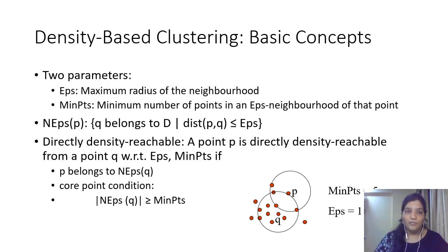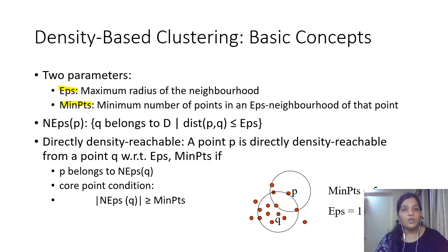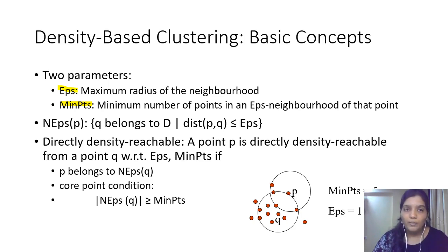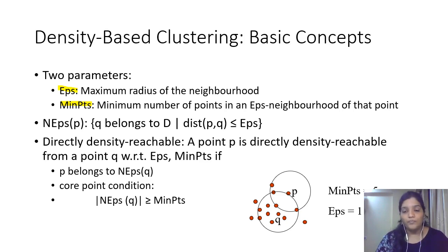When we talk about density-based clustering, we basically focus on two parameters: epsilon and minimum points. You can consider epsilon as the radius from a particular point for which you will define the clusters. This will define a circular cluster, but eventually these circular clusters will get combined together and form arbitrary shapes. From a particular point, we draw a circle of epsilon distance — that is the maximum radius from the current point, which will include the neighboring points.